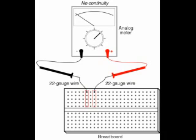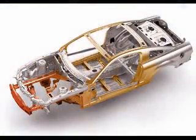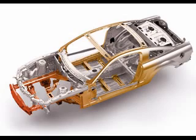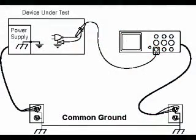Many electrical and electronic systems use common connections. Almost all cars use a negative ground connection that is connected to the metal chassis, effectively using the car frame itself as the conductor to the negative side of the battery. The negative side of the car battery is connected to the car chassis. A test instrument like an oscilloscope is connected to a common ground with a device under test, leaving the probe free to check for voltage and signals without having to reconnect the ground connection each time a new measurement is made.